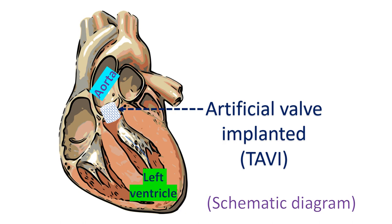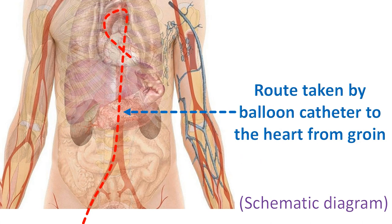The balloon catheter is withdrawn once the valve has been successfully implanted. As the procedure is done for severe native aortic valve stenosis or a previous surgically implanted valve, initial balloon dilatation is done in preparation for TAVI. After the TAVI procedure, the femoral access site can be closed with vascular closure devices to prevent back bleed and hematoma formation. This is because of a larger access with a bulky device compared to the usual diagnostic catheters and guide catheters for coronary interventions.